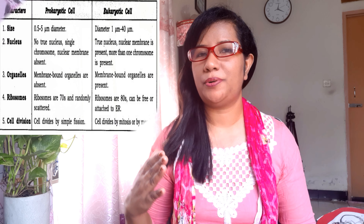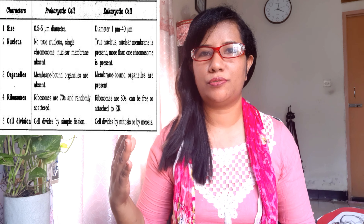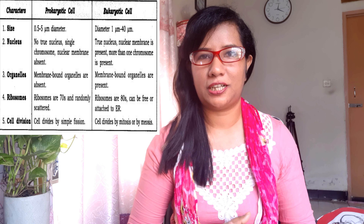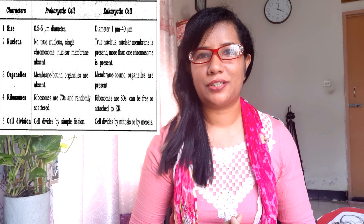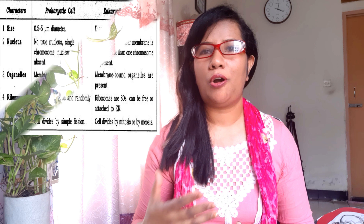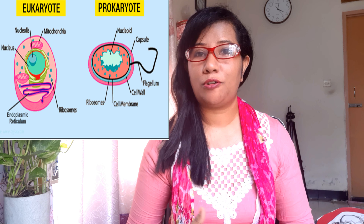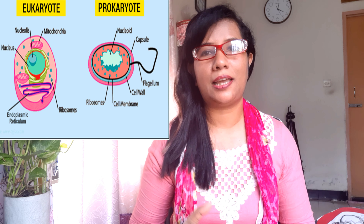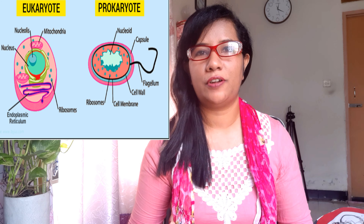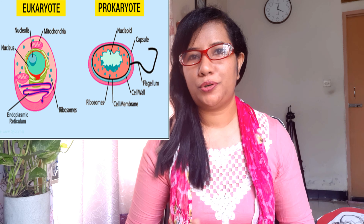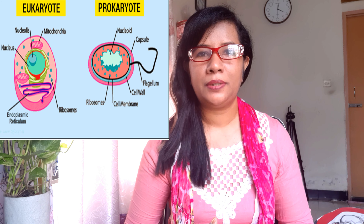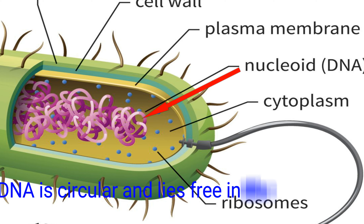Prokaryotes have an average cell diameter of 0.5 to 5 micrometres. Eukaryotic cells are commonly up to 40 micrometres in diameter, and commonly 1,000 to 10,000 times the volume of prokaryotic cells.